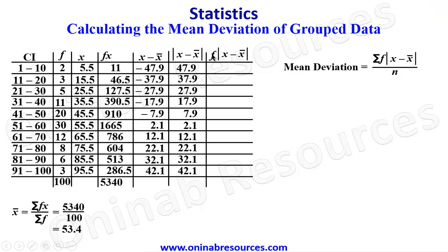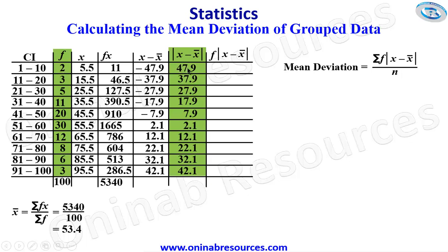We then go ahead to calculate f multiplied by the absolute value of x minus x-bar. So: 2 times 47.9 gives 95.8; 3 times 37.9 gives 113.7; 5 times 27.9 gives 139.5; 11 times 17.9 gives 196.9; 20 times 7.9 gives 158; 30 times 2.1 gives 63.